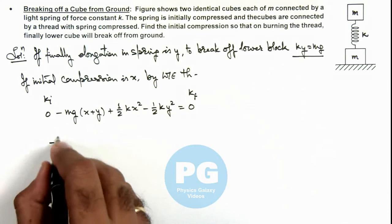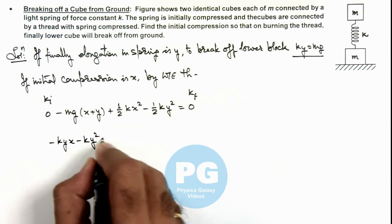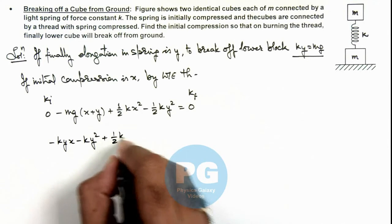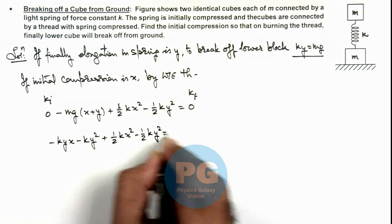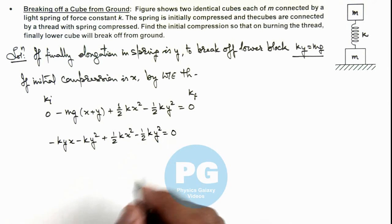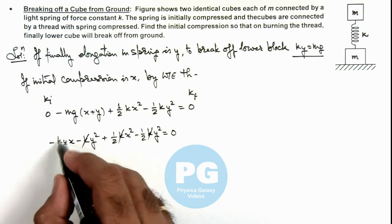If we further simplify this, mg we can write as ky. So this is minus kyx minus ky² plus half kx² minus half ky² equals zero. Here, k gets cancelled out throughout.